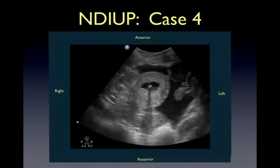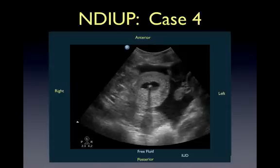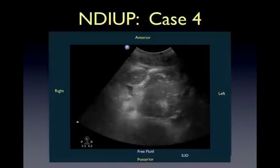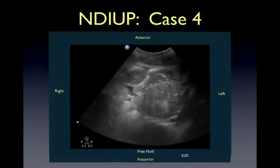This final case of an NDIUP was an HCG-positive female with an IUD, presenting with pain and tachycardia. A transabdominal view was adequate in identifying large amounts of free fluid in the pelvis, and the patient was taken immediately to the OR for suspected ruptured ectopic.